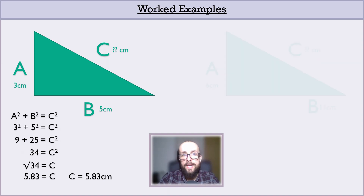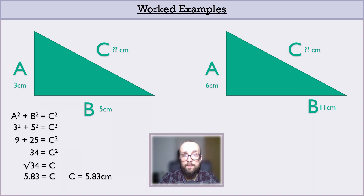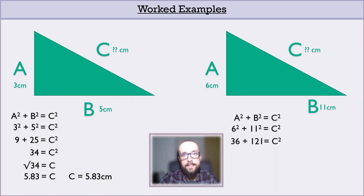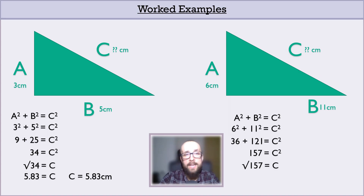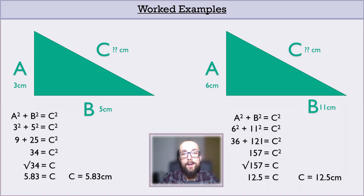Let's have a look at another example, in which A is 6 centimetres long and B is 11 centimetres long. Starting with our formula and inserting our known values: sorting out those squares leaves us with 36 plus 121 equalling C squared, which means 157 equals C squared once we add those together. We want C, not C squared, so we find the square root of 157. Root 157 should be somewhere between 12 and 13, because 12 squared is 144 and 13 squared is 169. The calculator tells us the root of 157 is 12.5 to 3 significant figures. So C is 12.5 centimetres long.